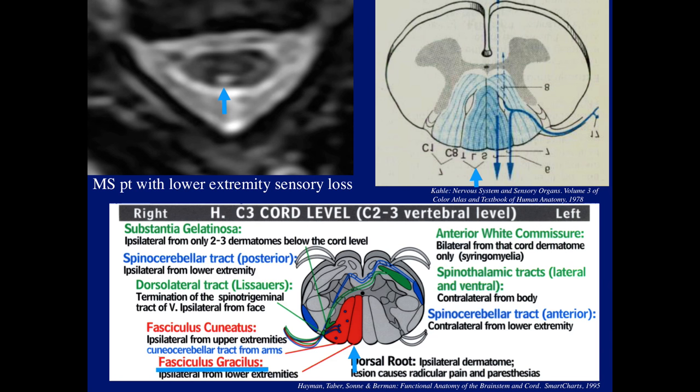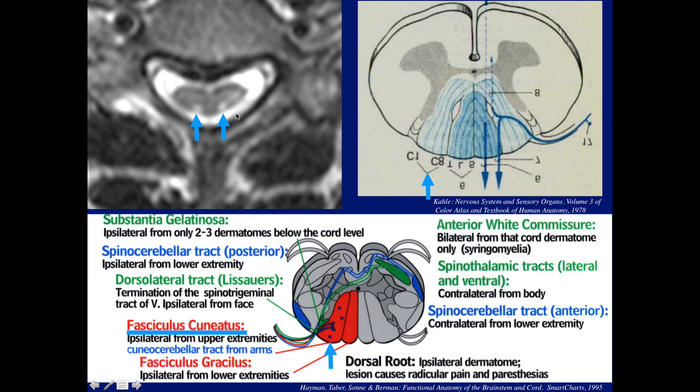The two gracile fasciculi are more medially and the cuneate more laterally. What are we seeing in this case? Stefan answered correctly: we're seeing abnormality involving the cuneate — notice they're more away from the midline. The arrows are pointing to the cuneate on this side and on the opposite side — both cuneates involved.